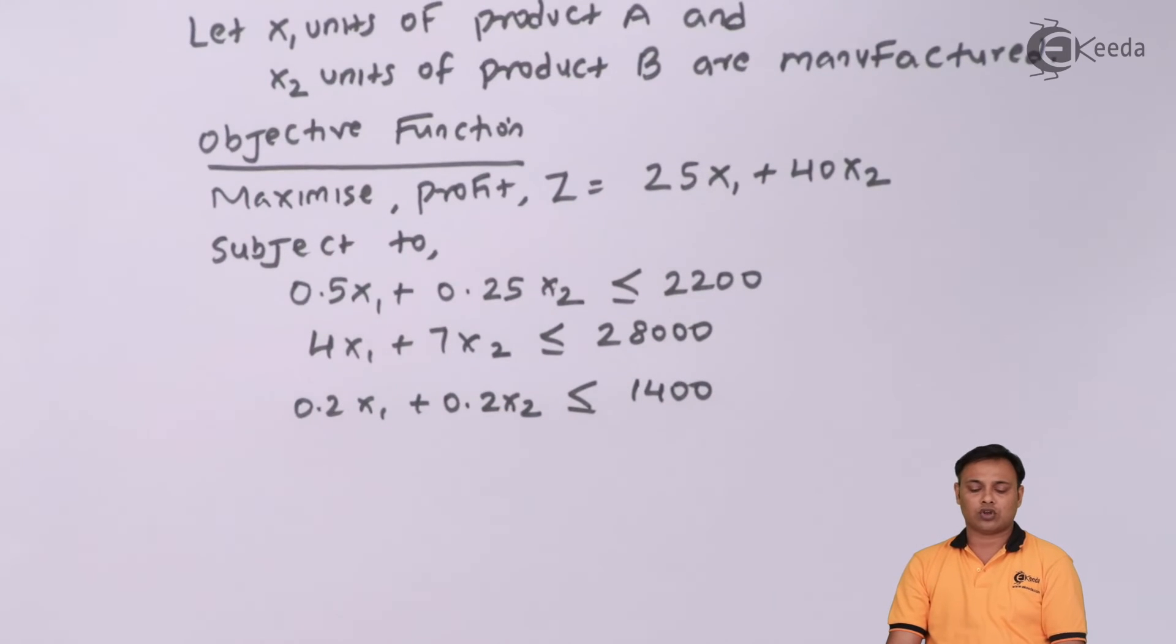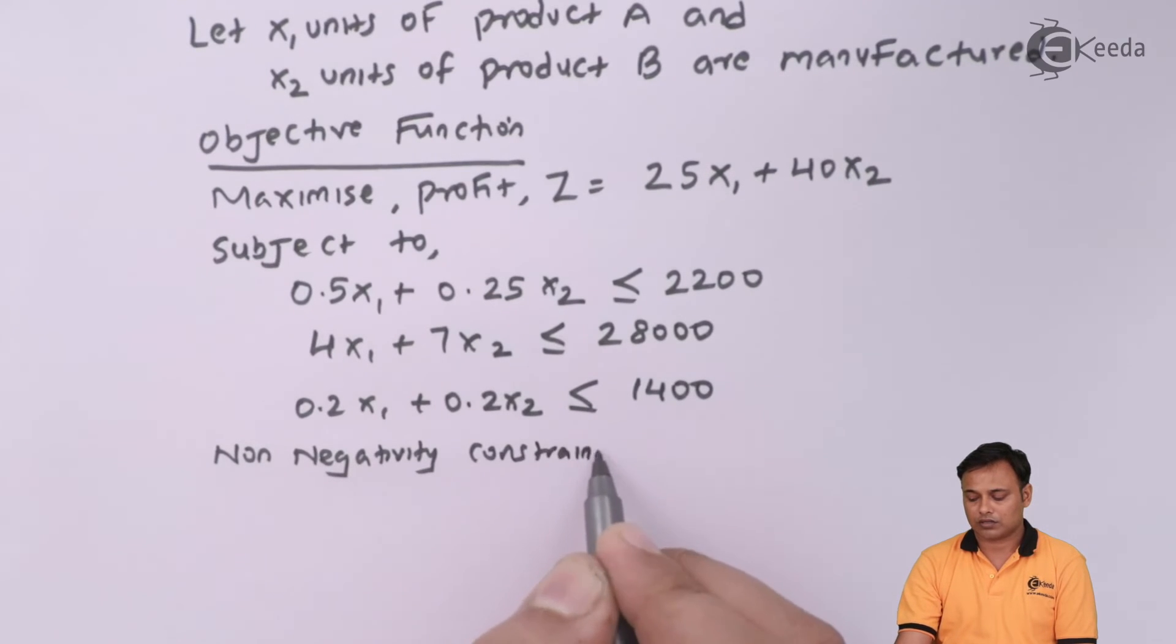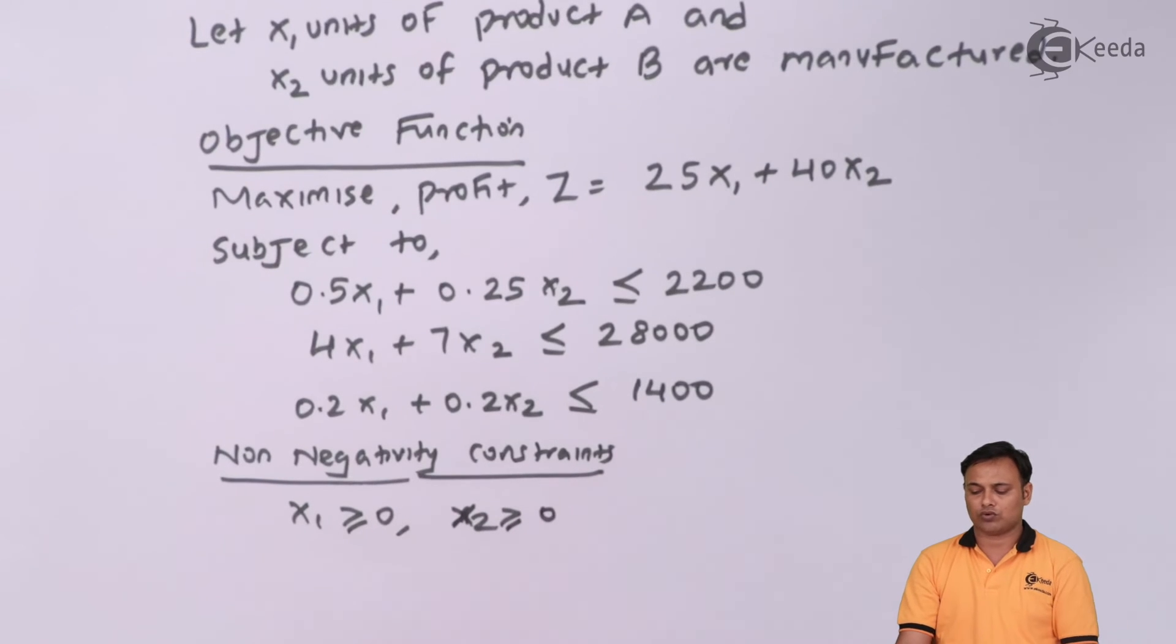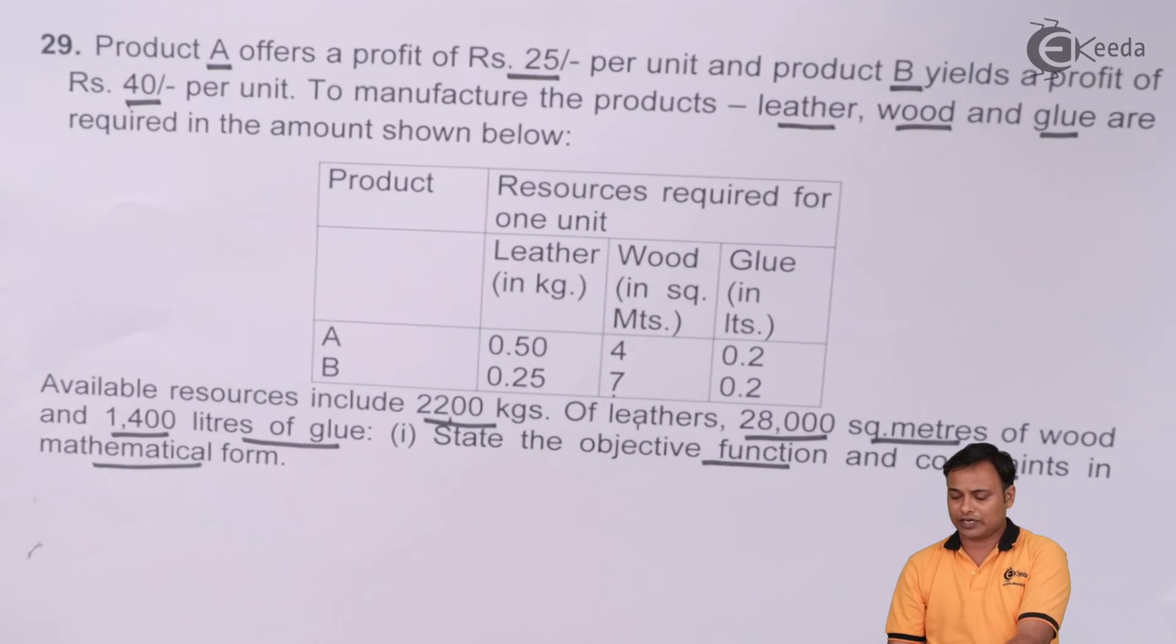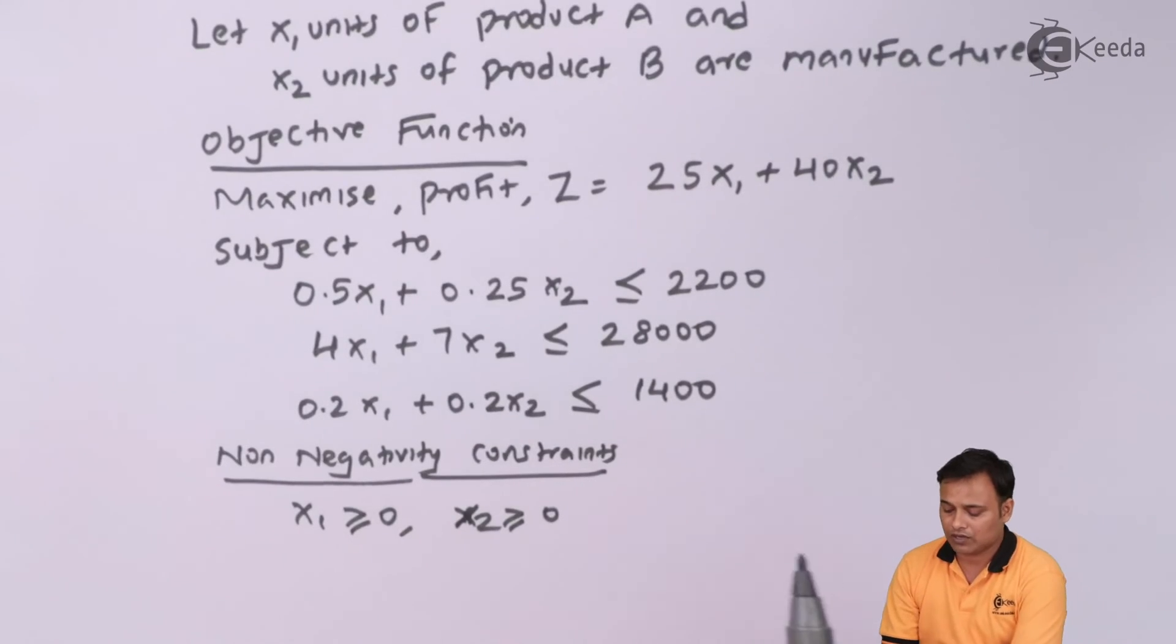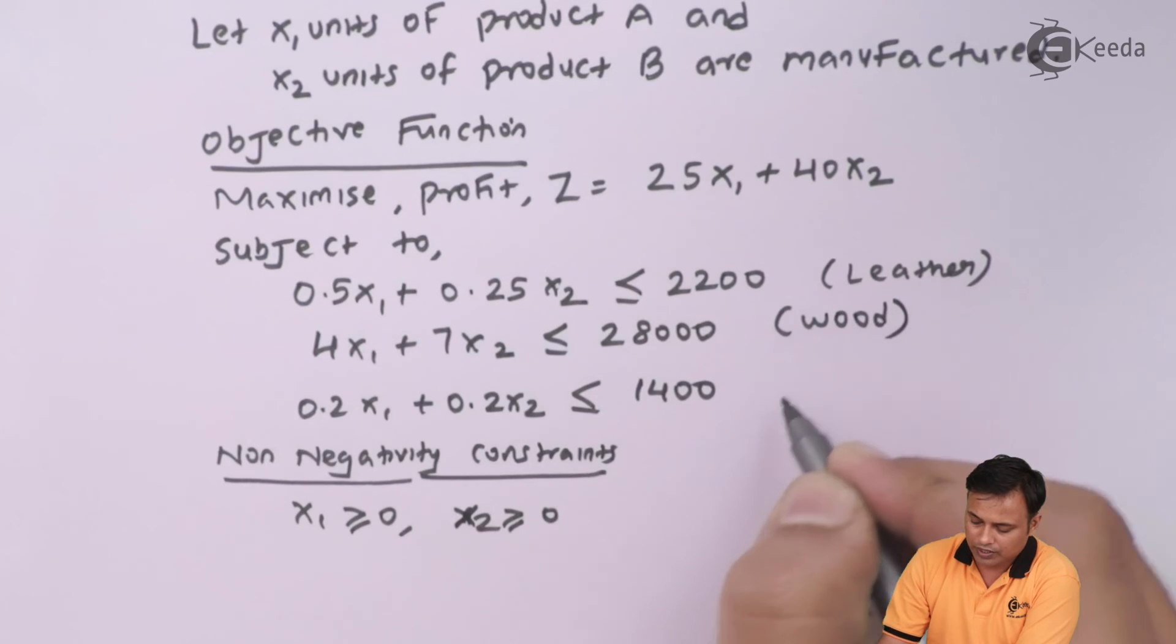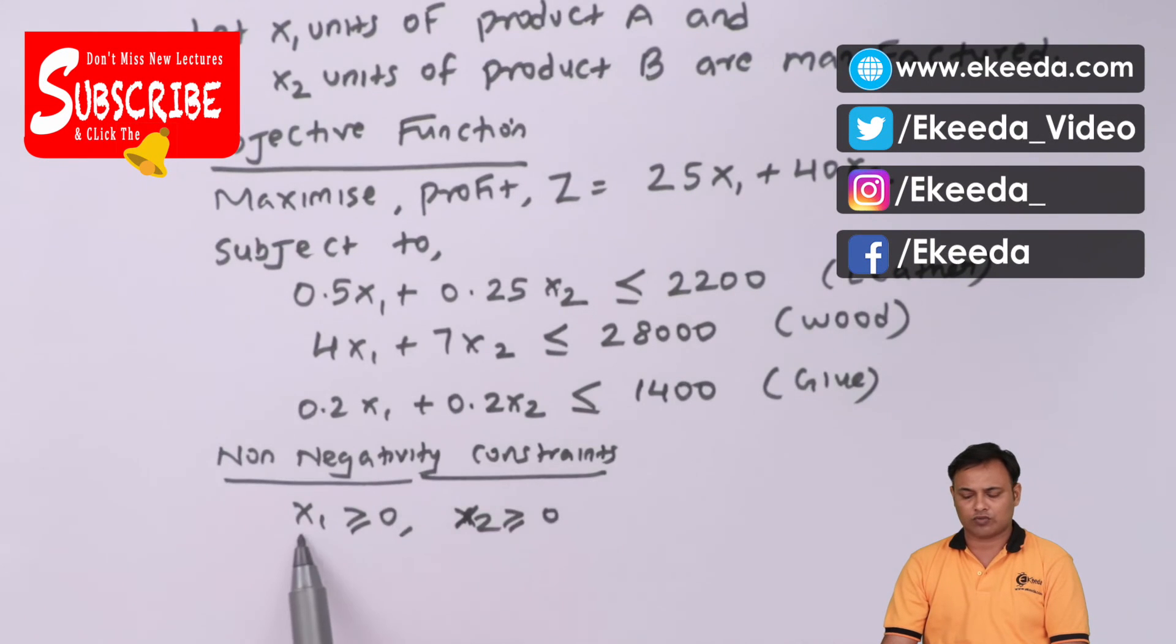And last we have the non-negativity constraints, that is x1 more than equal to 0 and x2 more than equals to 0. Here was my problem. We didn't have any demand constraint here. We added the resources constraint for leather, wood and glue. We noted down the non-negativity constraints as x1 more than equal to 0, x2 more than equal to 0. And we are done with the problem.